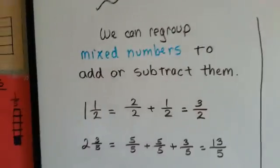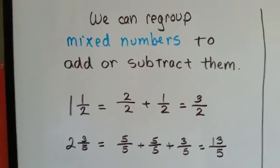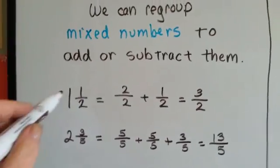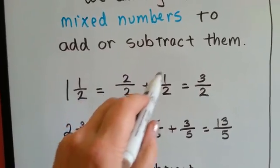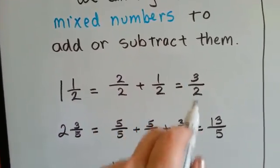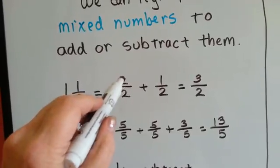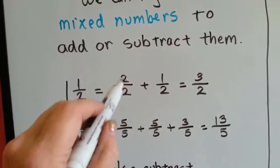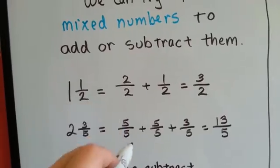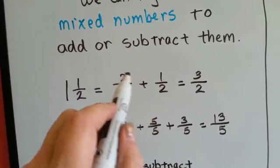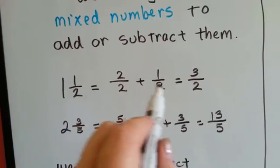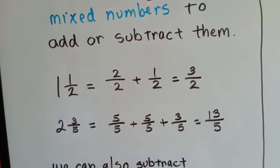We can regroup mixed numbers to add or subtract them. One and one half becomes two halves plus one half, which is three halves. Remember, if you have two parts of something that's cut into two parts, it's one whole. So this is one and that's the half. It becomes two plus one is three. Same denominator, we have three halves.